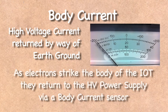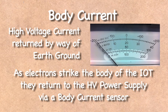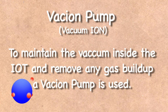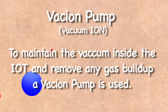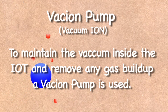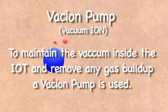But there are some stray electrons that do strike the sides of the tube. This is called body current and it must be kept to a very low level.